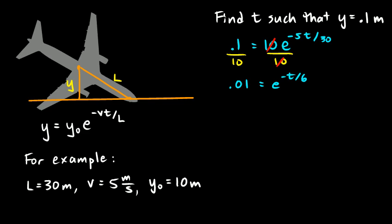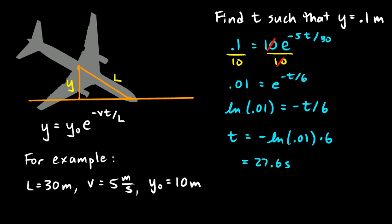And then we solve this for t by taking the natural log of each side. And we have the natural log of 0.01 equals negative t over 6. So, t has to equal negative natural log of 0.01 times 6. And you work that out on the calculator. And it comes out to 27.6 seconds. And at that speed, at 5 meters per second, that comes out to about 138 meters of travel distance. So, that sounds pretty reasonable based on these initial assumptions.